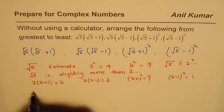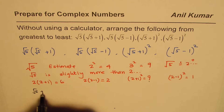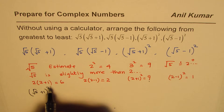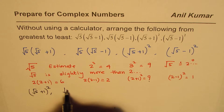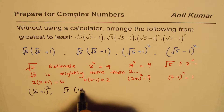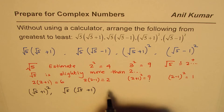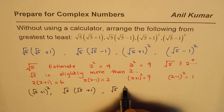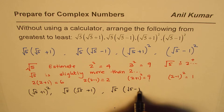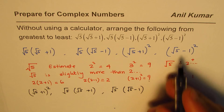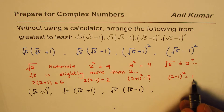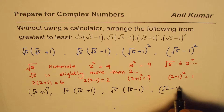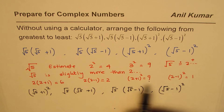These numbers help us arrange from greatest to least. 9 is highest, so (√5+1)² is greatest, followed by √5×(√5+1), then √5×(√5-1), and the least is (√5-1)².